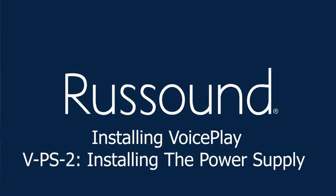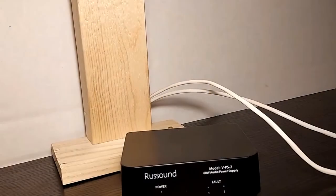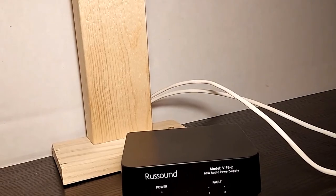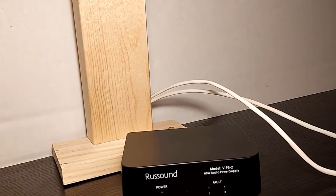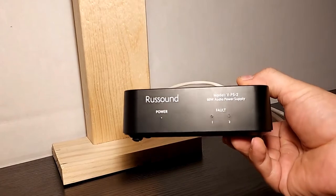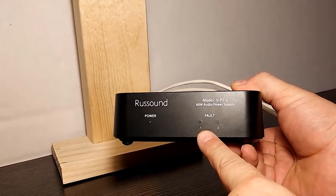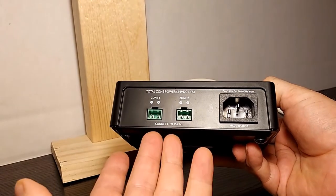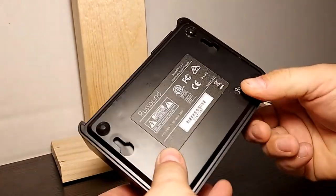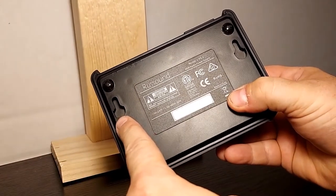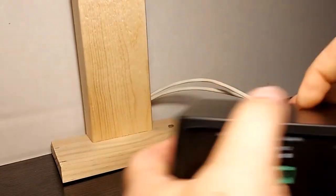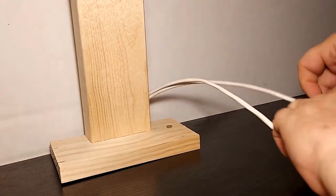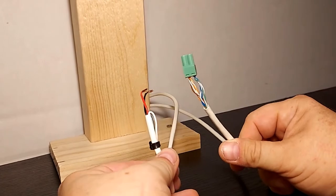Now let's install the power supply. Here's the VPS2, small black box. Power indicator, fault indicators for both of the power supplies for the two keypads. On the back, again receptacles for the Phoenix terminals and a standard plug-in. Some key slots for mounting it on a board or a stud. And here's the wires coming from our keypads.